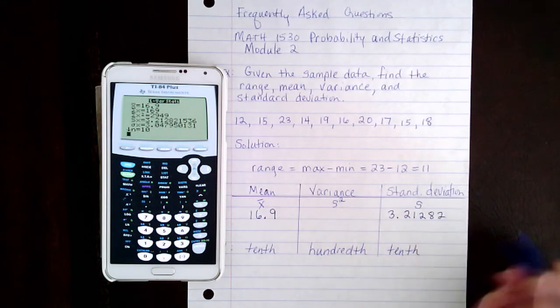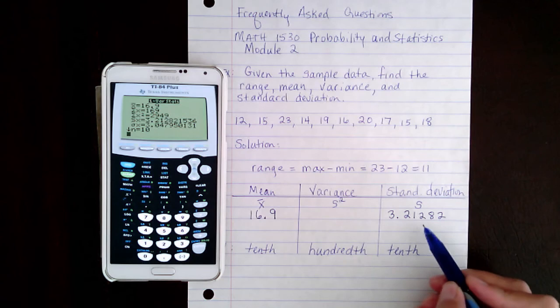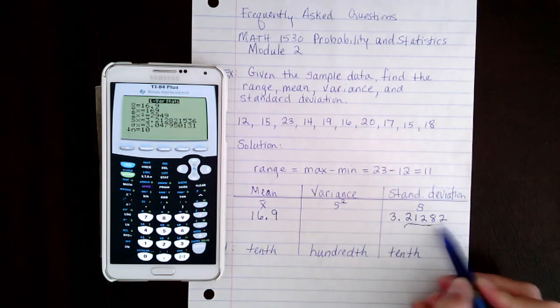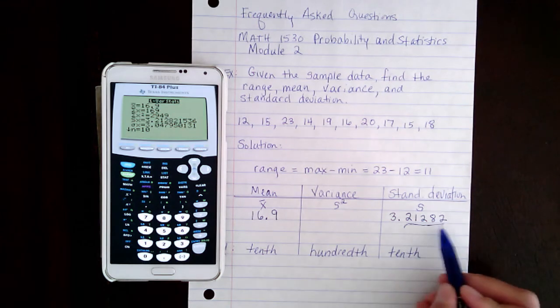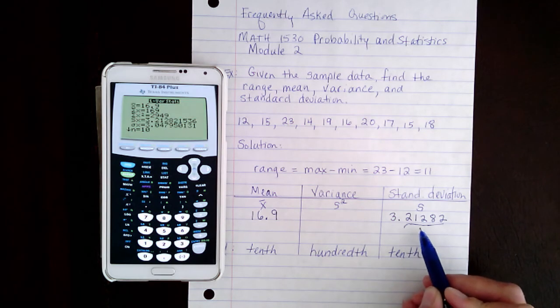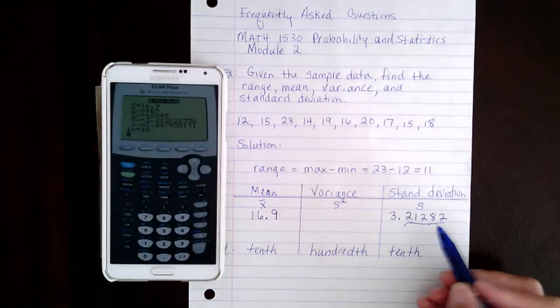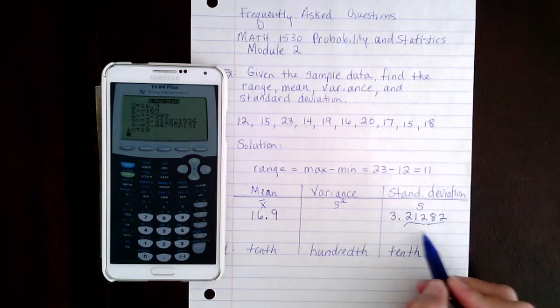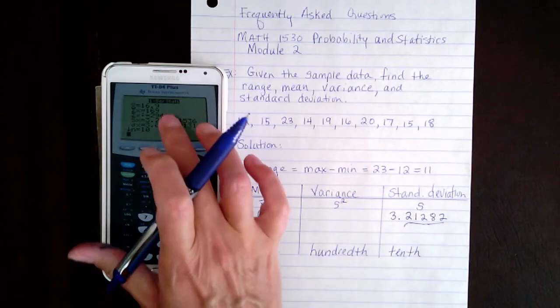And you could keep going, but the important thing to remember is to keep at least five digits after the decimal to avoid rounding error, because what we're about to do is take this and square it to find the variance.